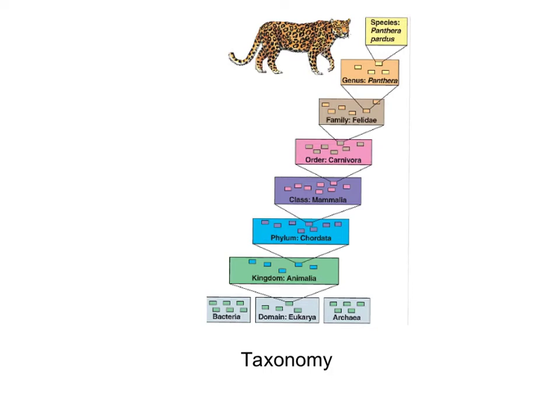Taxonomy originated with Linnaeus in the 18th century. He was a botanist who started classifying the plants he was finding. The classification system — taxonomy — is based on structural similarities, both internally and externally.